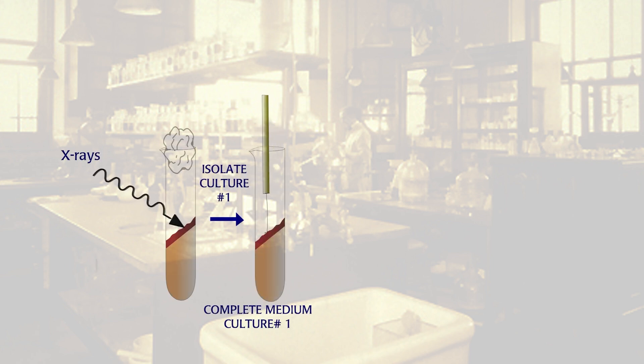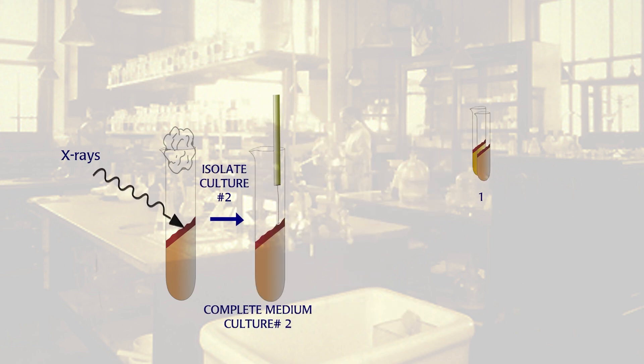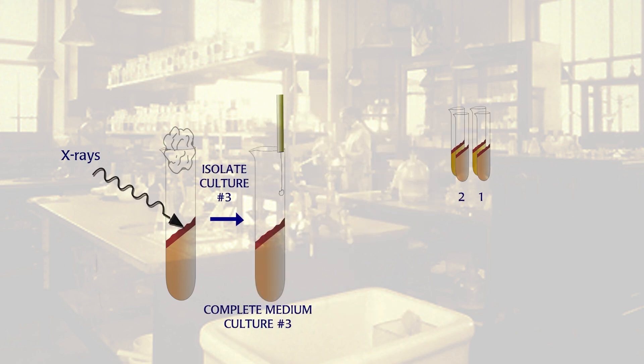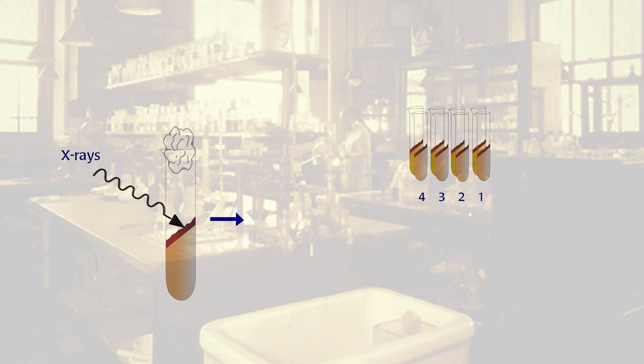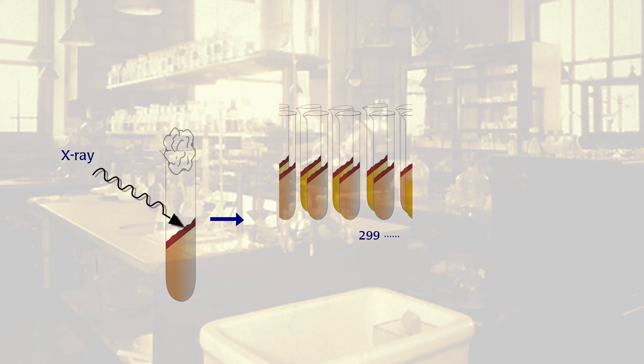They grew the offspring of the irradiated Neurospora on complete medium that contained all the vitamins and amino acids. Next, they tested the ability of each of these cultures to grow on minimal medium. Most of these cultures grew on minimal medium, meaning they didn't have a genetic mutation of the kind they were looking for. However, the 299th culture did not grow on minimal medium.